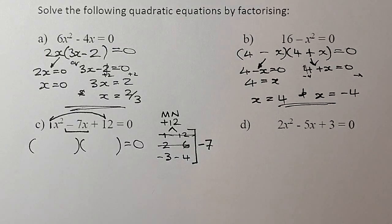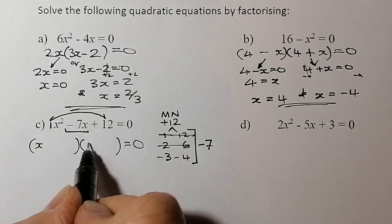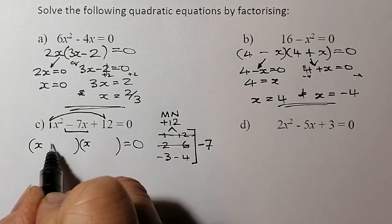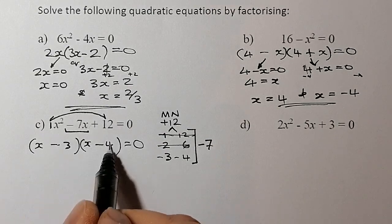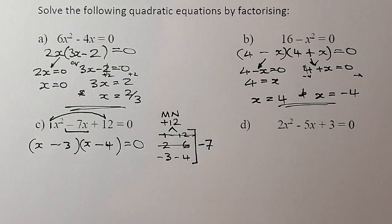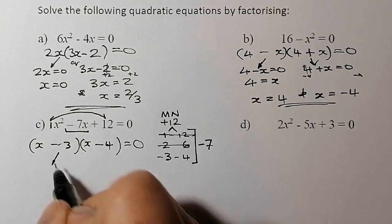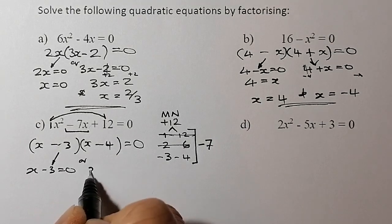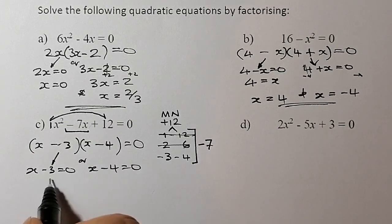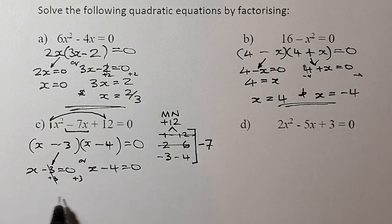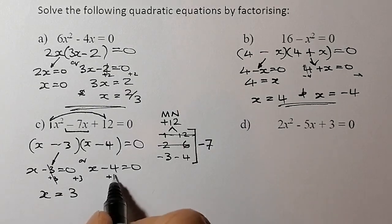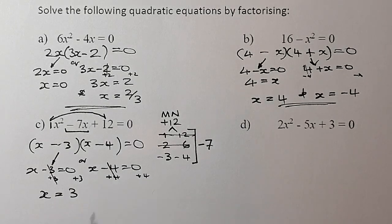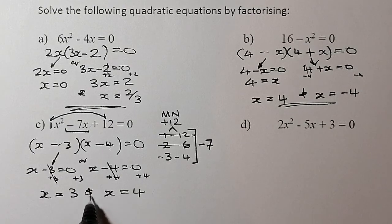With a 1x² term, I go straight into two brackets: (x − 3)(x − 4). The two negatives multiplied give the positive 12, which checks out. Setting each factor to zero: x − 3 = 0 gives x = 3, and x − 4 = 0 gives x = 4. So my solutions are x = 3 and x = 4.